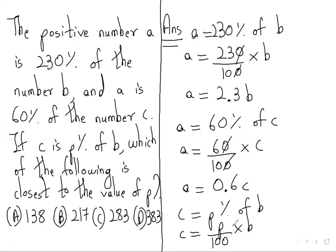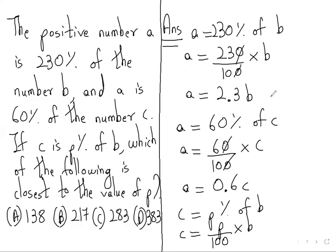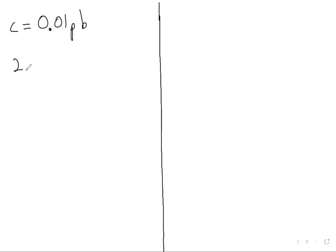Now we need to find the relation between C and B. Both equations show values of A: A equals 2.3B and A equals 0.6C. Since both are values of A, they are equal to each other, so 2.3B equals 0.6C.